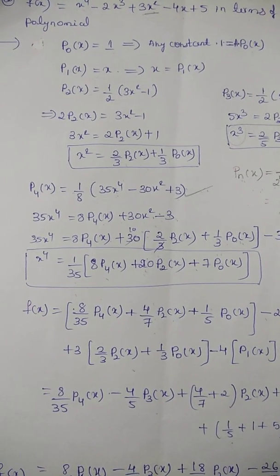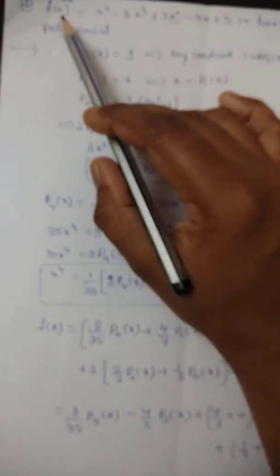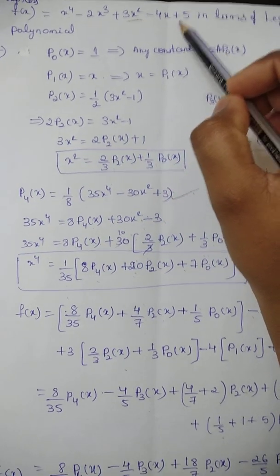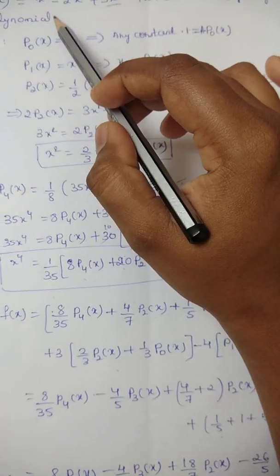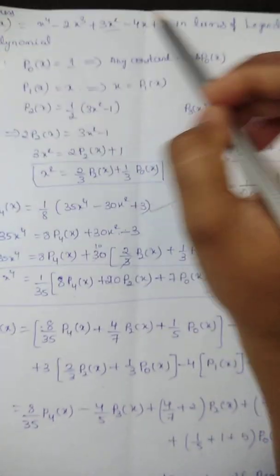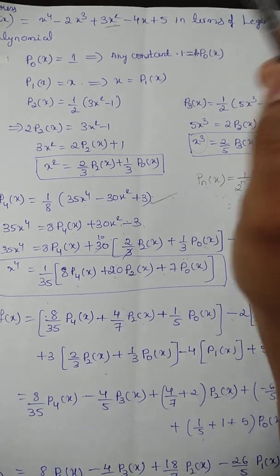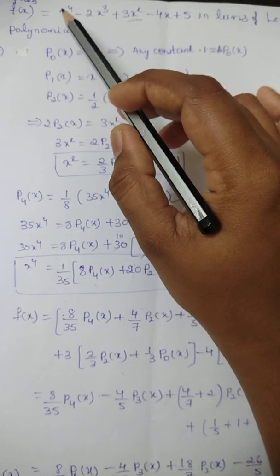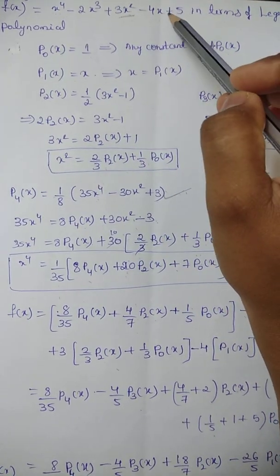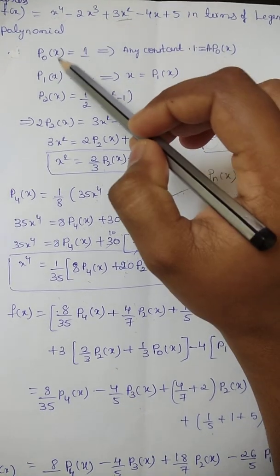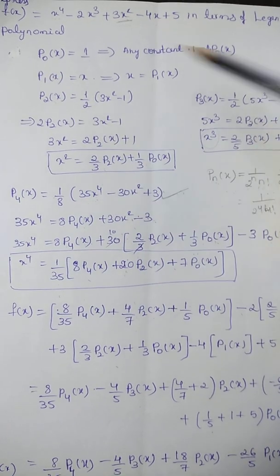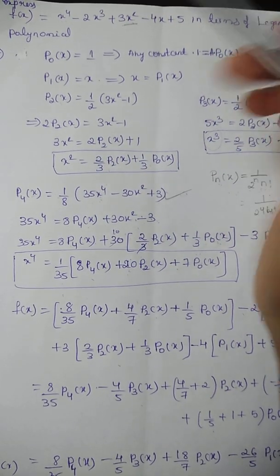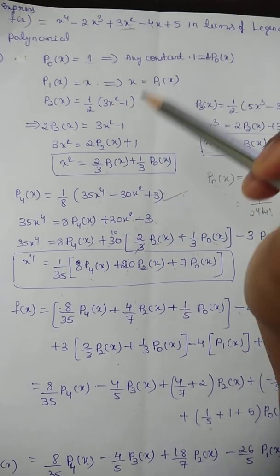Hello students. This is the next problem after Rodrigues' formula. Express f(x) = x⁴ - 2x³ + 3x² - 4x + 5 in terms of Legendre polynomials. So in place of x⁴, x³, x², x, and the constant, we have to use symbols like P₀(x), P₁(x), P₂(x), P₃(x), and P₄(x) — converting f(x) into a Legendre polynomial expression.